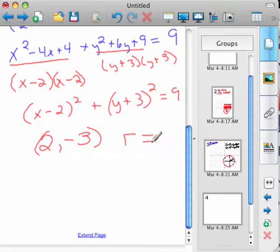And your radius is 3. Because it's a square root of 9? Because it's a square root of 9.